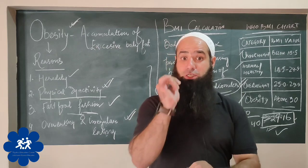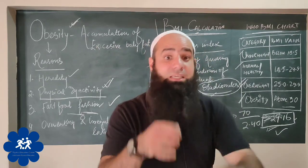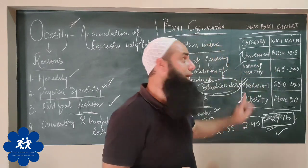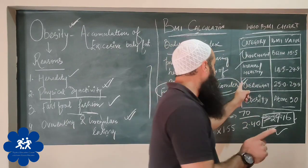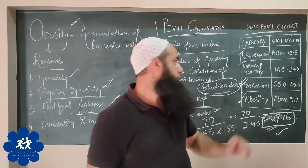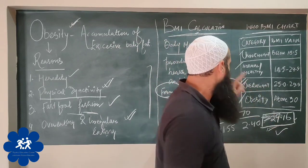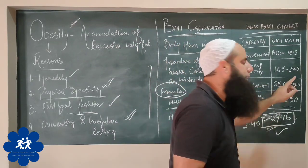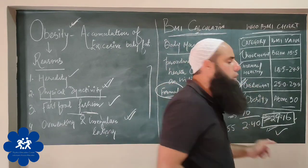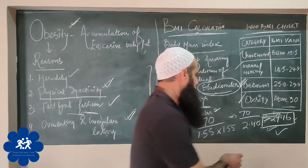According to the BMI table, you can find out what weight a person should have based on their height. If the value is below 18.5, then the person is underweight. If it is 18.5 to 24.9, then the person is healthy or normal. If it is 25.0 to 29.9, then the person is overweight. And if the value is above 30, then the person is obese.